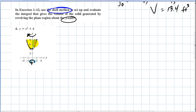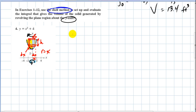I draw one representative shell with height h and radius r. The radius is some distance x, so r equals x. The thickness is dx. I need to figure out the shell volume, which depends on the radius and the height. The height is the upper y value minus the lower y value — upper minus lower in general, since it's vertical.